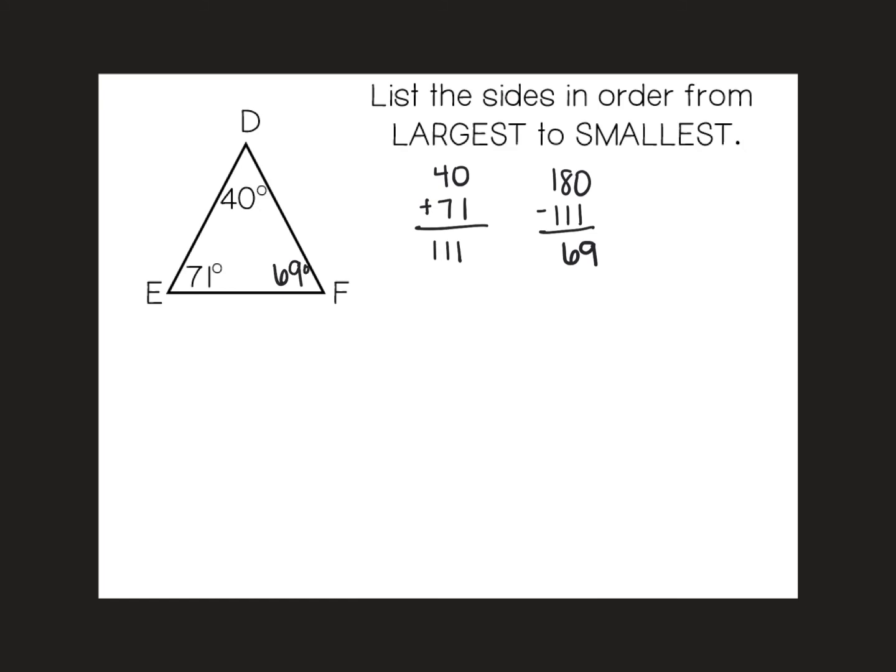So now, when I start with the largest angle, I'm looking at 71 degrees, which is across from the largest side, and that side would be named DF.